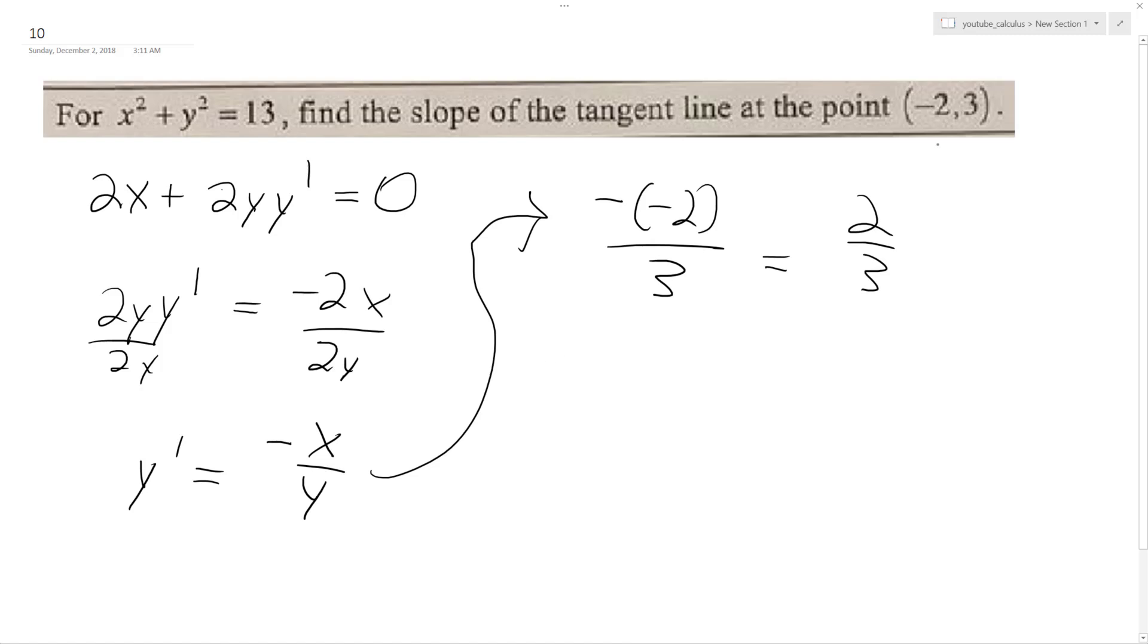So I use the point slope form, plug in my point negative 2, 3. y minus 3 equals 2 thirds times x minus negative 2, which is going to be plus 2.